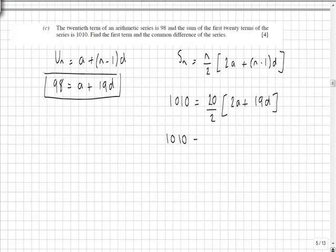Simplifying, we can see we have that as 10 times 2a plus 19d. Dividing both sides by 10 would give us 101 is equal to 2a plus 19d.